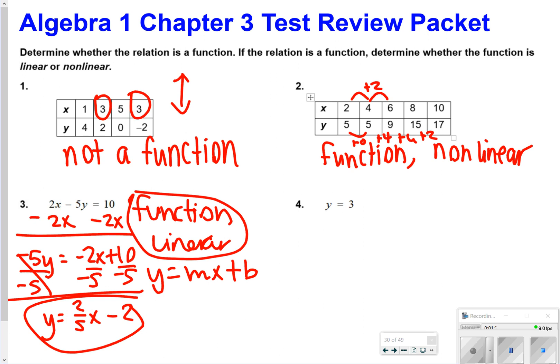The last one, number 4, is also a function, and it is linear, because if you graph this one, y equals 3 looks like this, and that can pass the vertical line test. Okay, so there are your answers for 1 through 4.